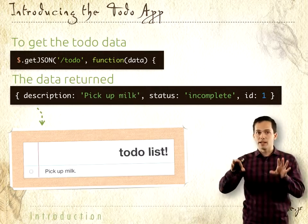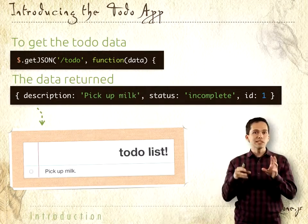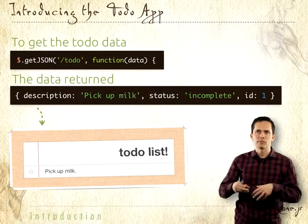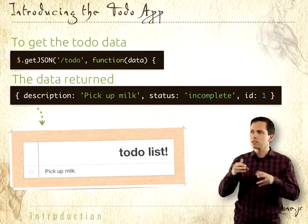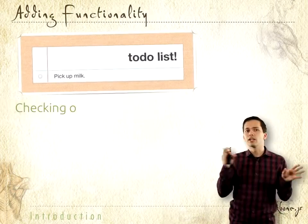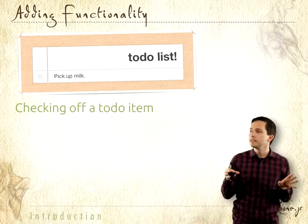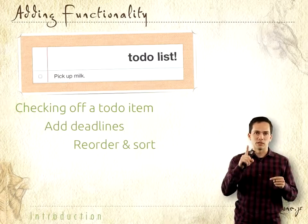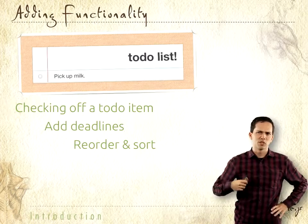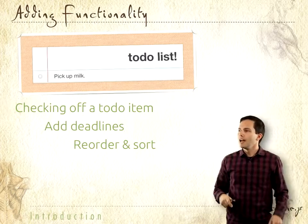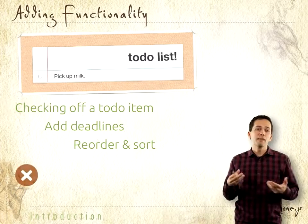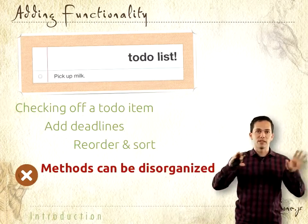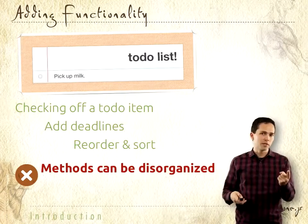This is all fine and good until we start adding a lot of functionality to our application. We might have a bunch of JavaScript functions flying around. We might need to check off the to-do button, add deadlines, or reorder and sort our one to-do item. Before we know it, we might have a very disorganized application — all these methods flying around with no structure. That's the first problem.